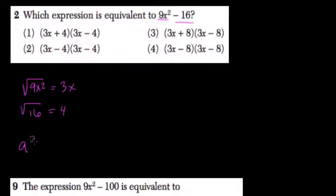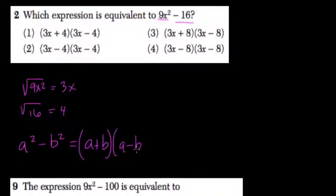So here, when you have the difference of two squares, a squared minus b squared, that always equals a plus b times a minus b.